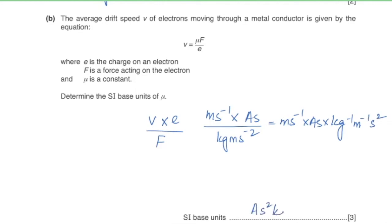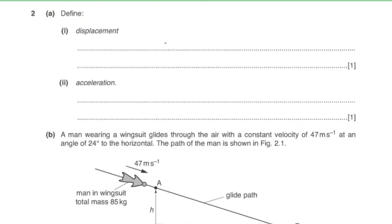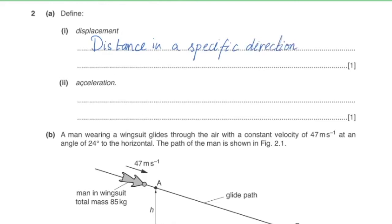Question two, part a: define displacement and acceleration. Displacement is a vector quantity which is distance in a specific direction. Acceleration is the rate of change of velocity.